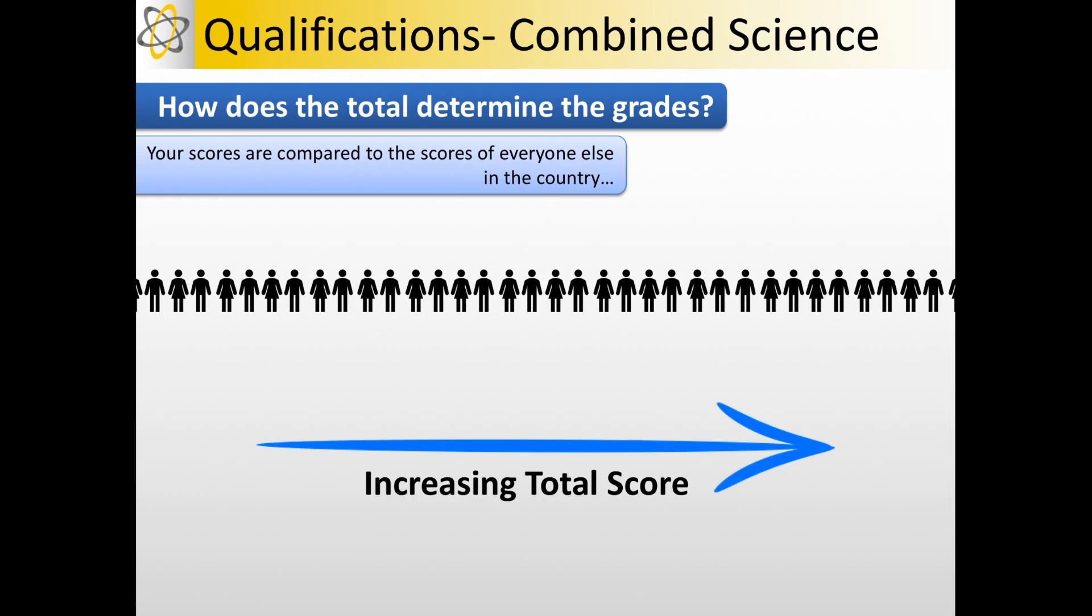So you might need 100 marks to achieve two grade fours. The next boundary down would be a grade four and a grade three and that might only need 96 marks. The next boundary up from two grade fours would be a five and a four, and you might need say 108 marks to achieve that pair of grades. They then fill in the rest of the grade boundaries in a similar manner.